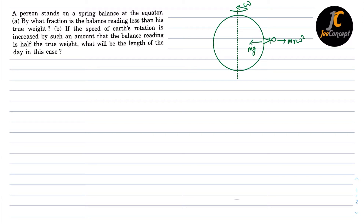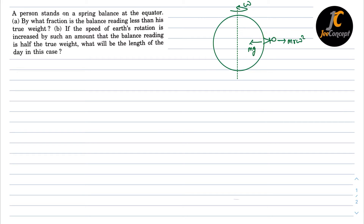Let's understand the scenario first. This is the earth, and the person is standing on the earth at the equator. The mg force acts toward the center of the earth. Due to the rotation of the earth, the mr·ω² centrifugal force acts in the outward direction. So the net reading of the balance machine is nothing but equal to the normal force N, and N equals mg minus mr·ω².